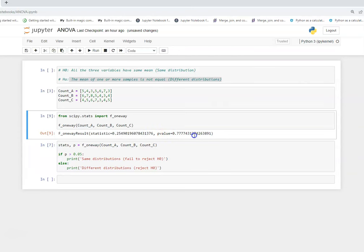Now we see the p-value is much greater than say 5% alpha, so it is 77%. So in that scenario we fail to reject the null hypothesis. That means it says that all these three distributions are equal.